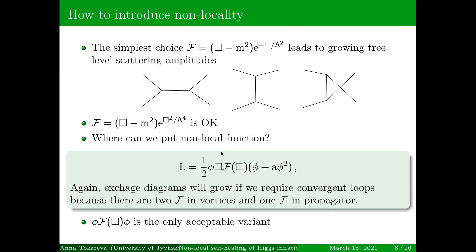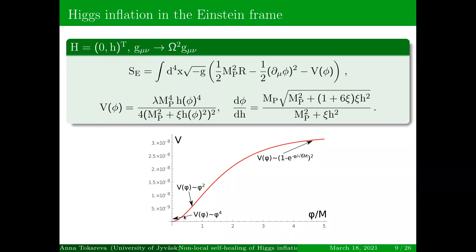One should be careful about how to put the non-local function into the Lagrangian. If you write the Lagrangian naively, exchange diagrams also grow if you require convergence of loop diagrams, because not only the propagator is non-local but also there are non-local vertices, and you cannot simultaneously fulfill the two requirements that loops are convergent and tree diagrams are not growing. For the scalar field, the only acceptable variant is the form we use — which is why we work in the Einstein frame with a canonically normalized Higgs.